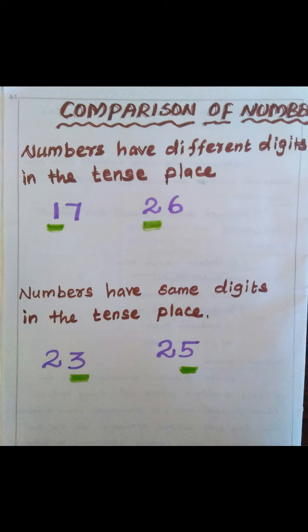The number which has more tens will be the bigger number. So here in this case, 26 is the biggest number and is bigger than 17.